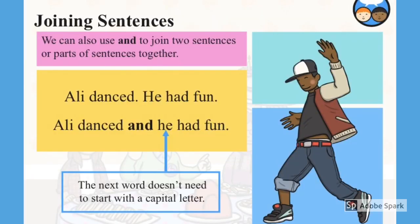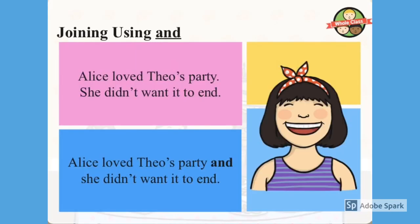We can also use 'and' to join two sentences or parts of sentences. Ali danced. He had fun. We can use 'and' and it would be: Ali danced and he had fun. Alice loved Theo's party. She didn't want it to end. We use 'and' and it becomes: Alice loved Theo's party and she didn't want it to end.